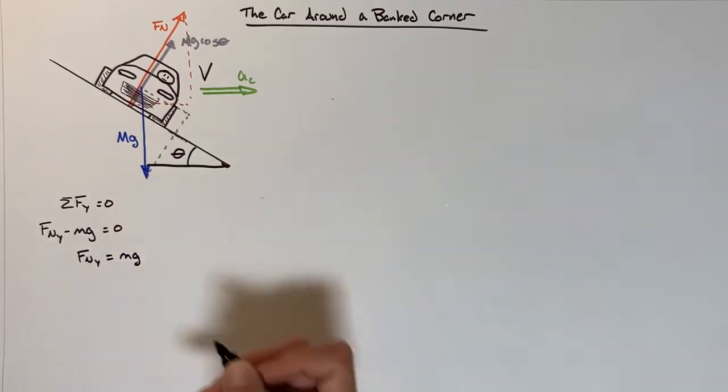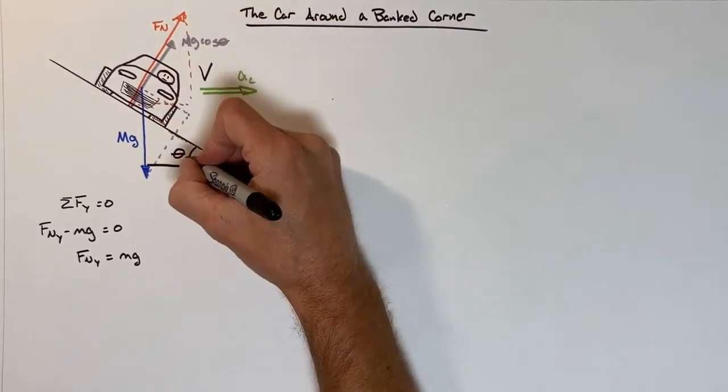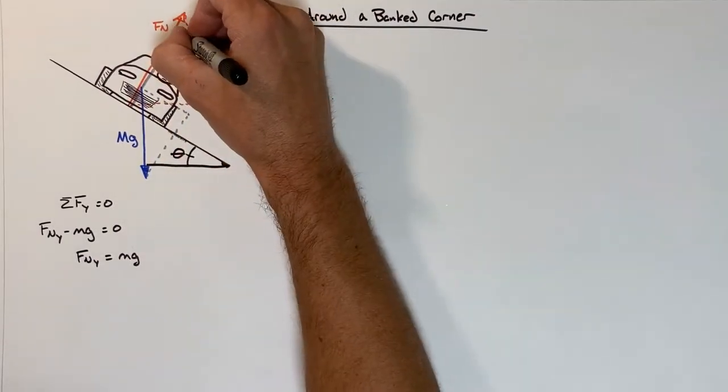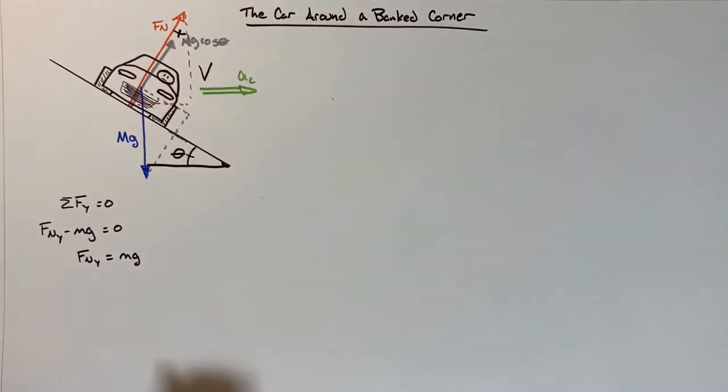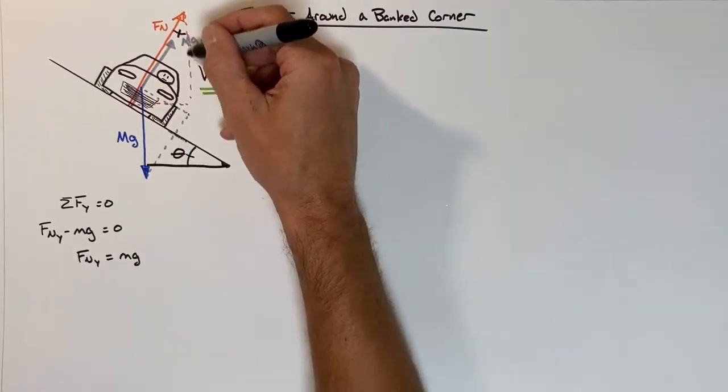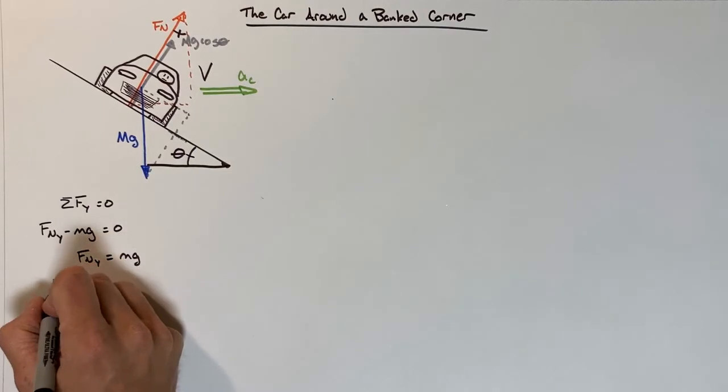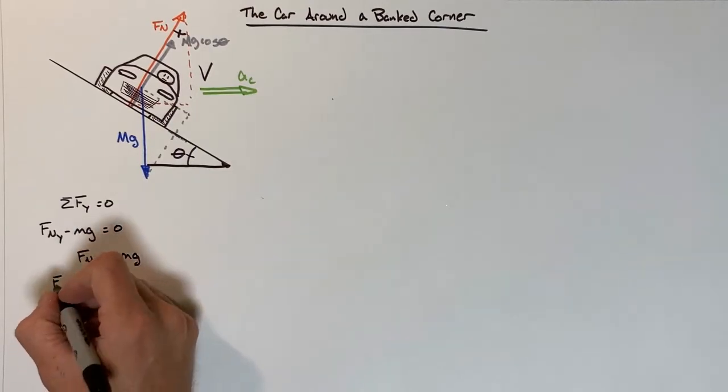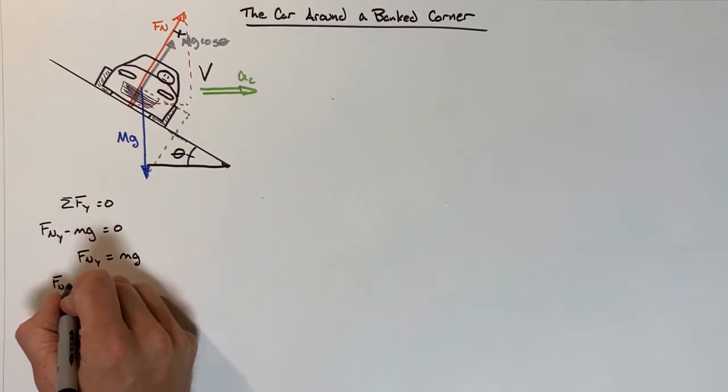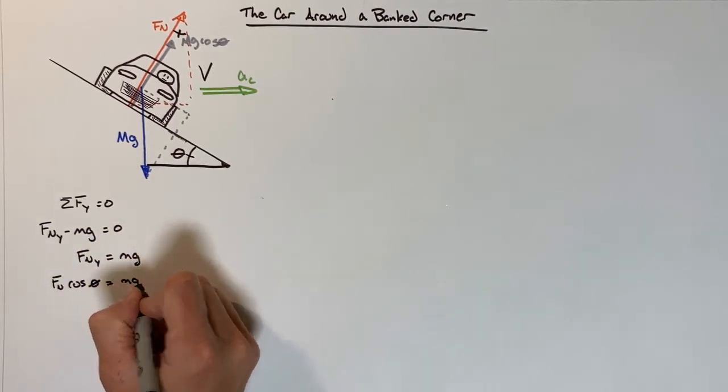And if we spend a little time with this, we can recognize that this angle here is equal to that angle there. So if I don't want to talk about Fn_y but rather Fn and some function of the angle, I can say Fn cosine theta equals mg.